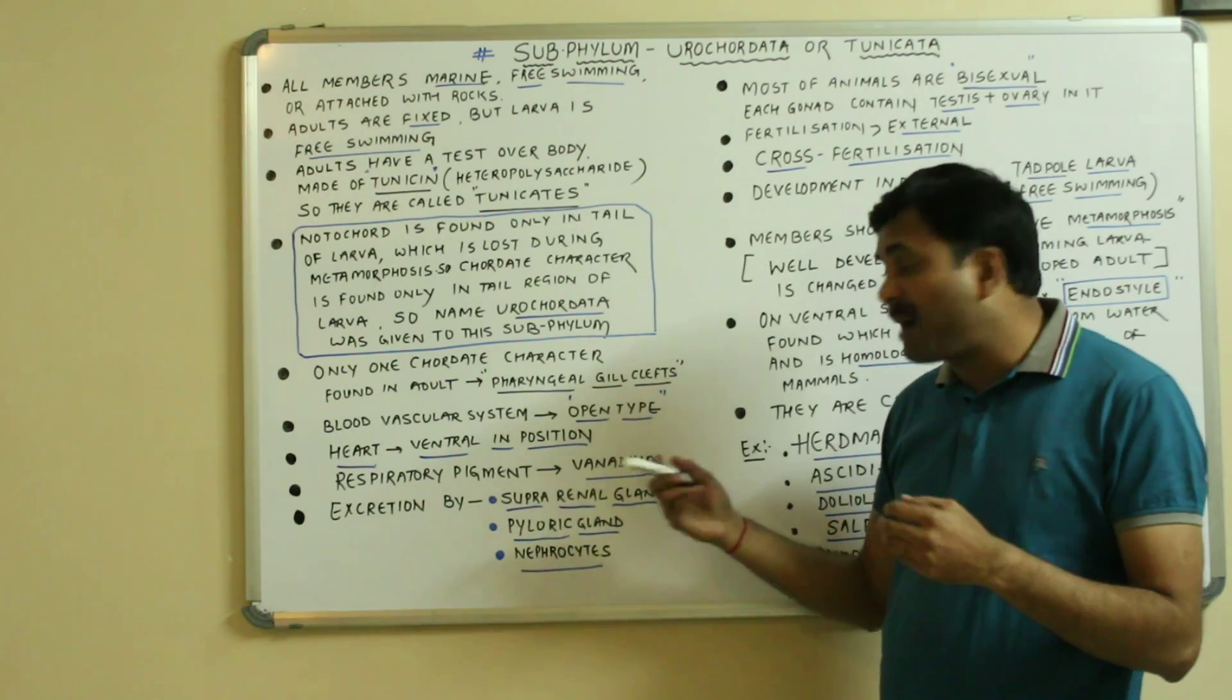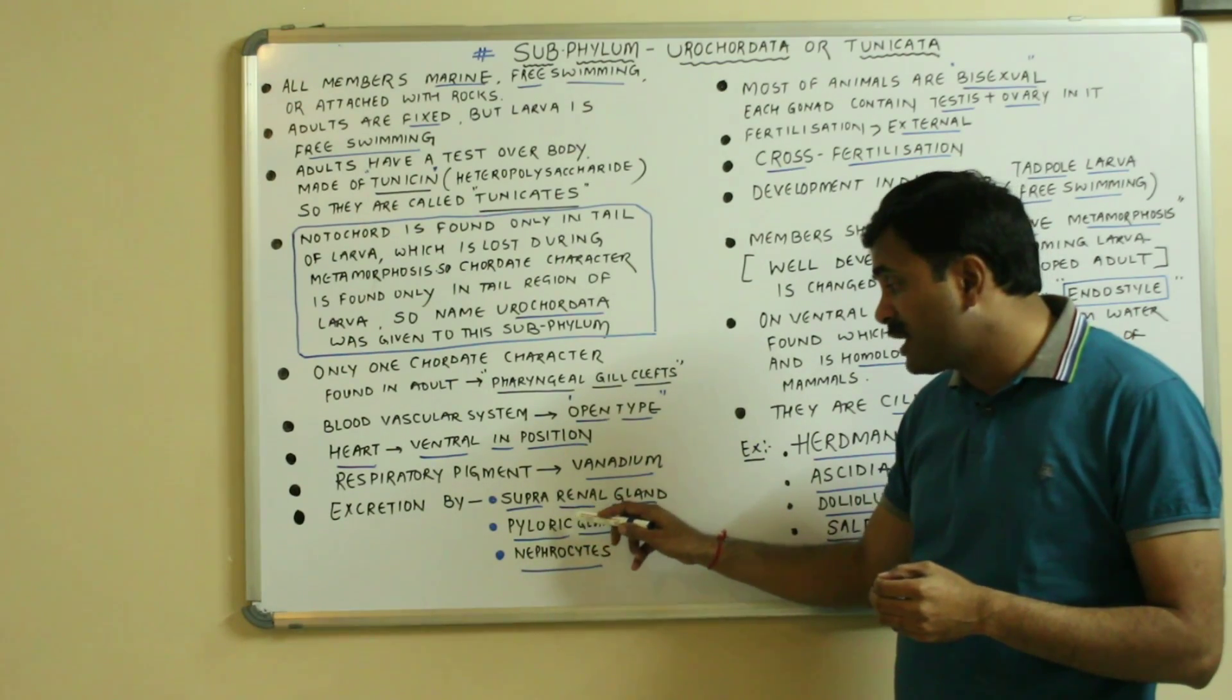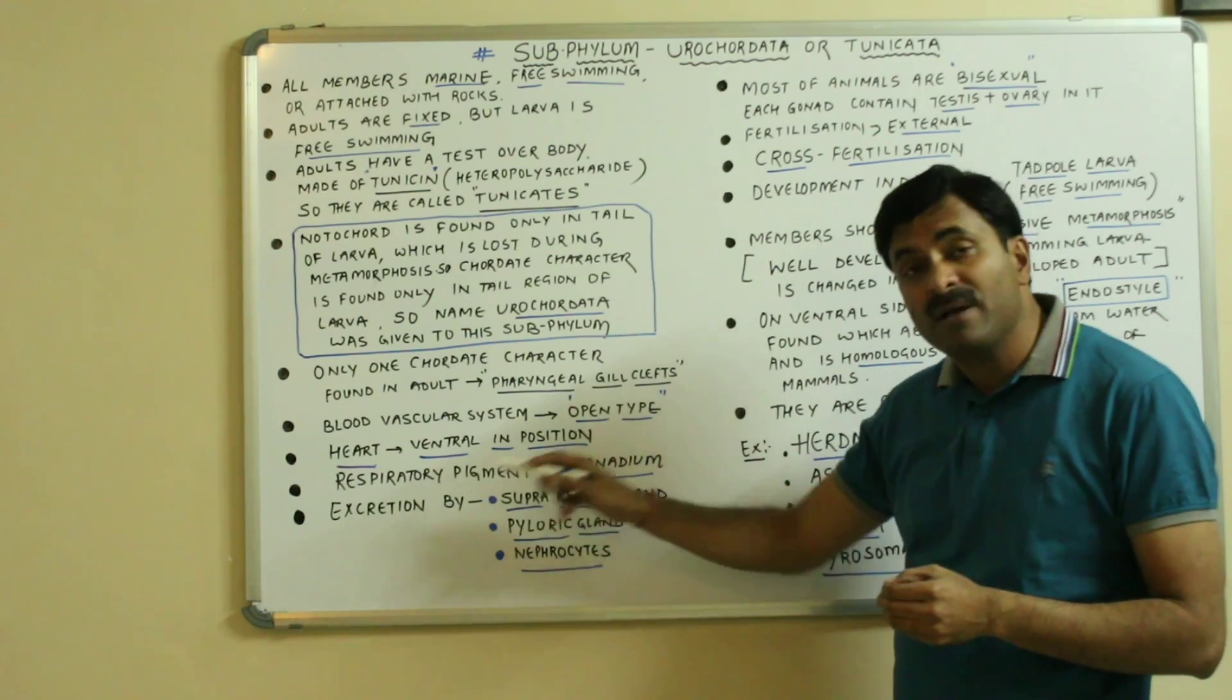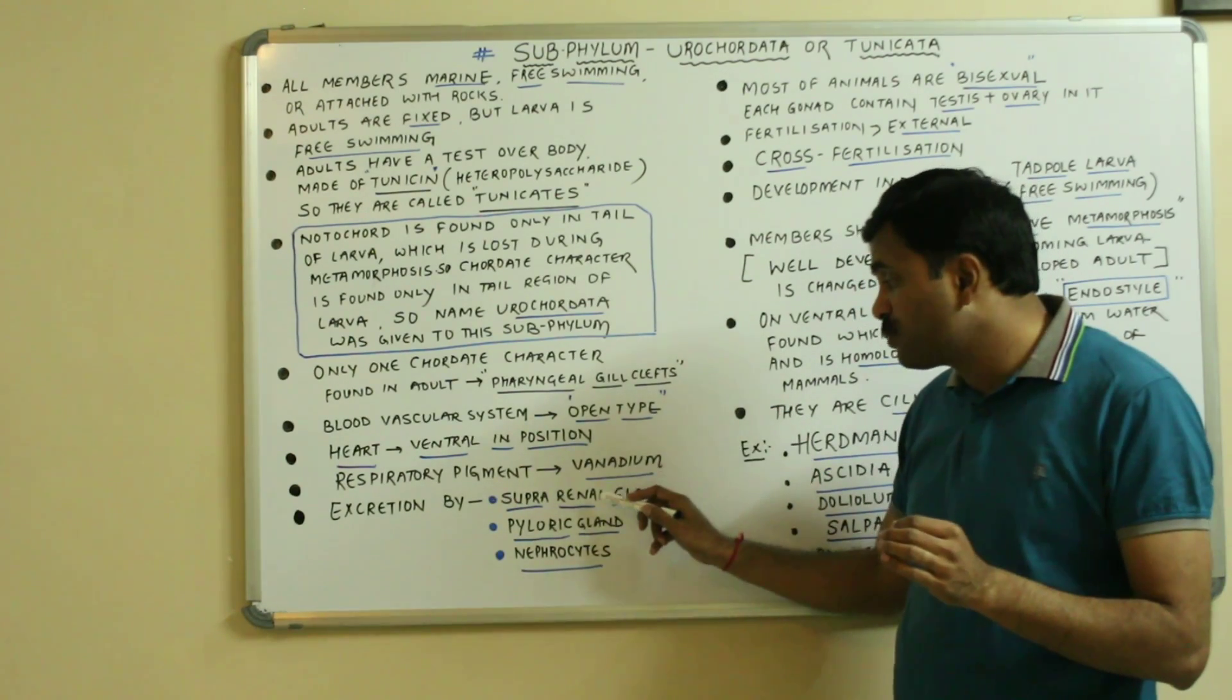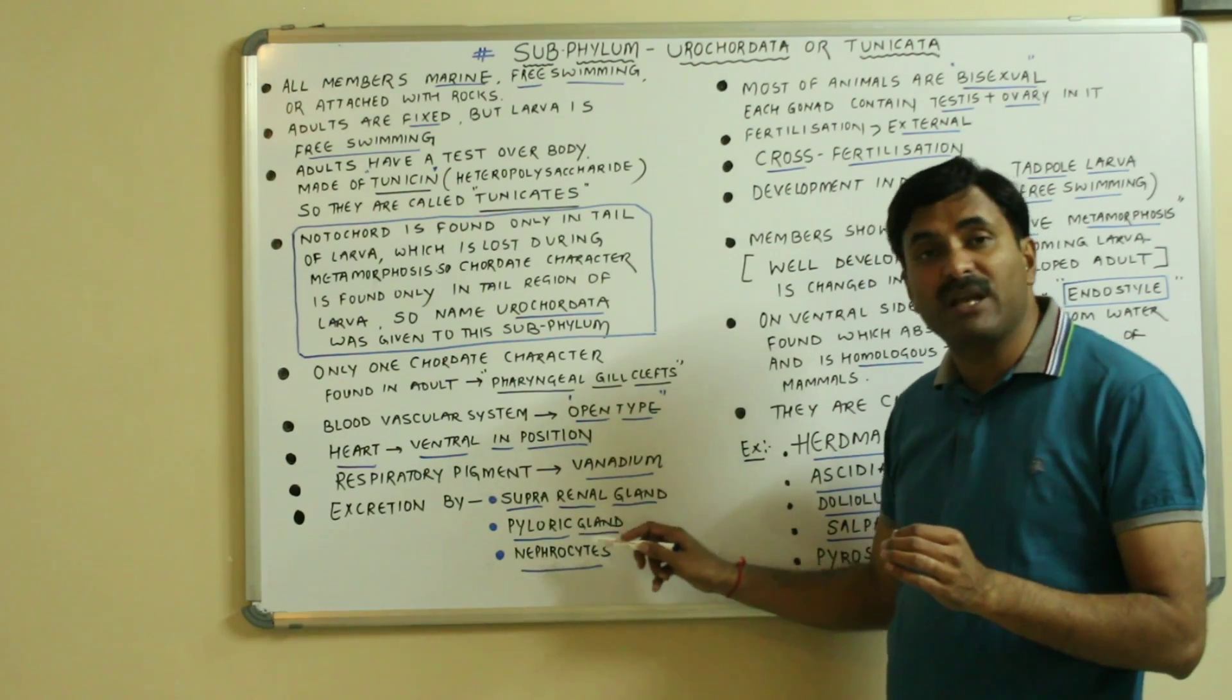Excretion is by suprarenal gland or by pyloric gland or by the nephrocytes. Again, I am repeating excretion by suprarenal gland or the pyloric gland or the nephrocytes.